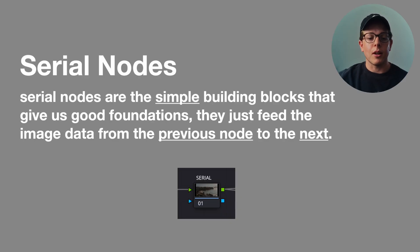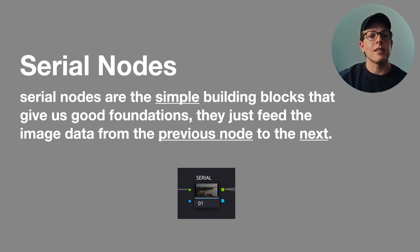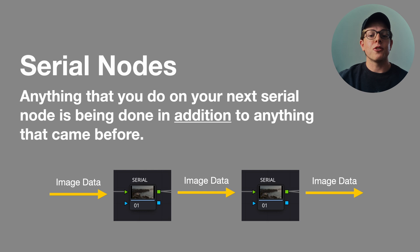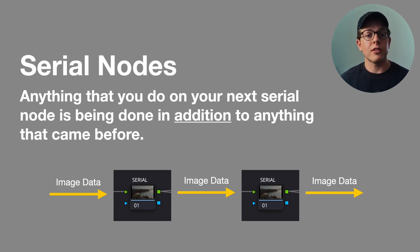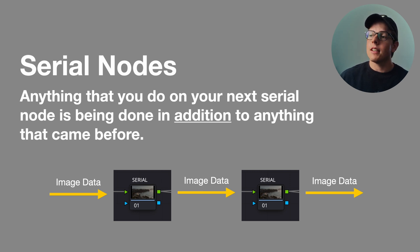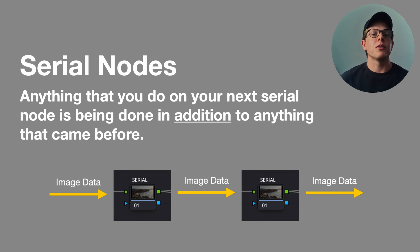Serial nodes are the simple building blocks that give us good foundations. They just feed the image data from the previous node to the next node. Most of your adjustments are likely going to be done on a serial node because it's a simple way of processing your adjustment. Anything you do on your next node is done in addition to anything that came before — image data flows in and then out to whatever comes afterwards, so you're pretty much just adding as you go.